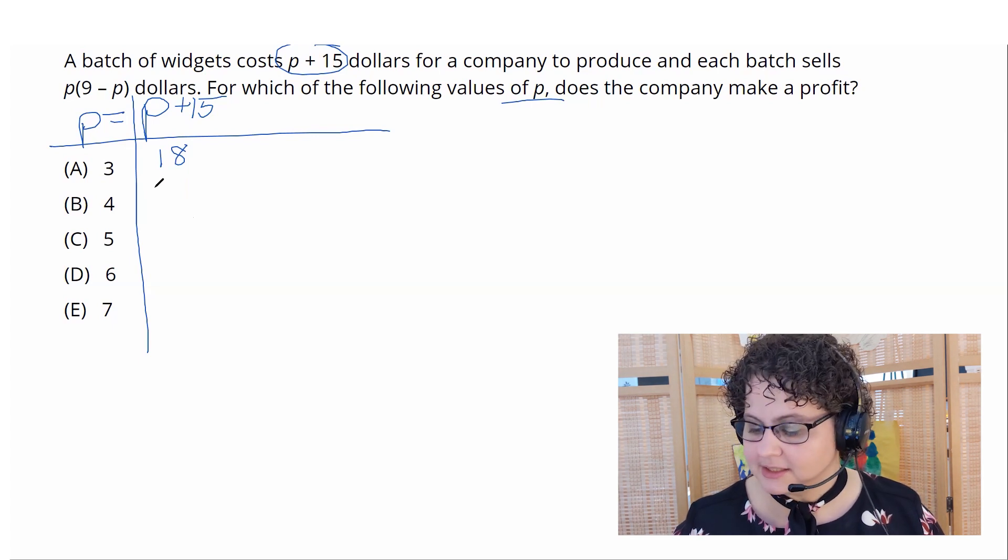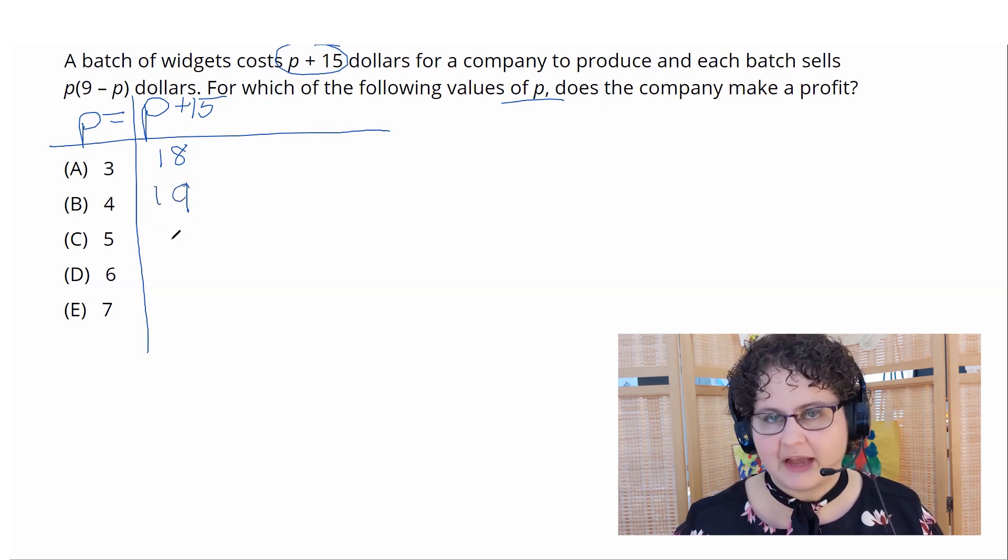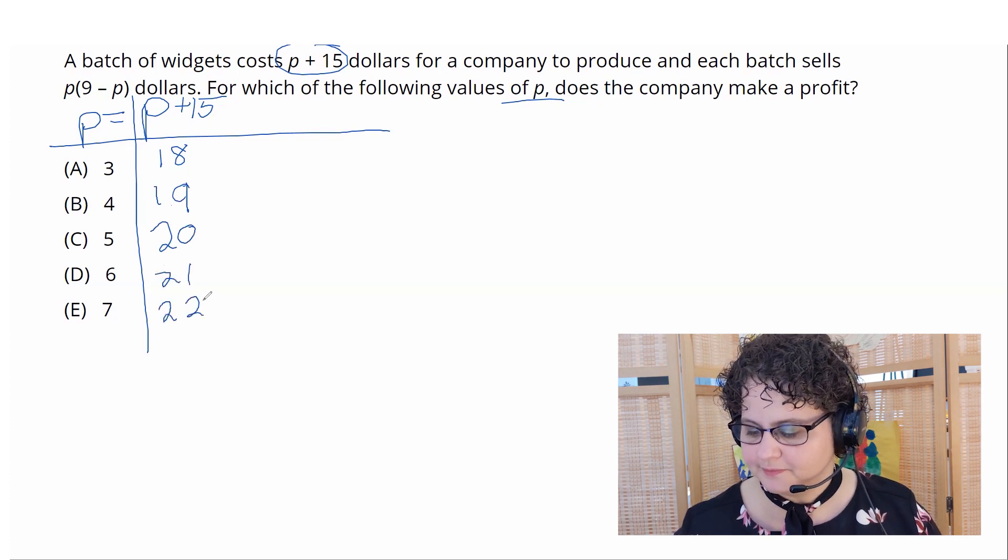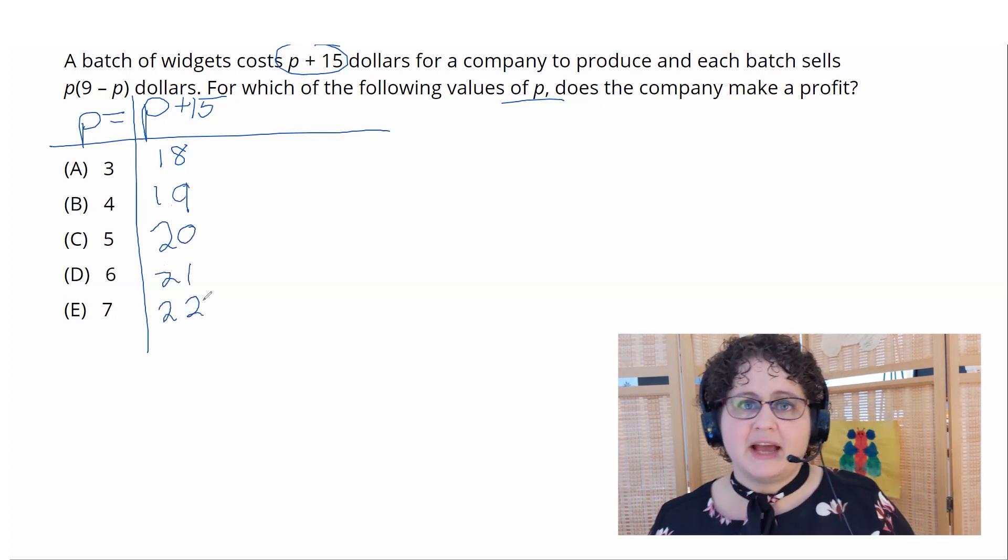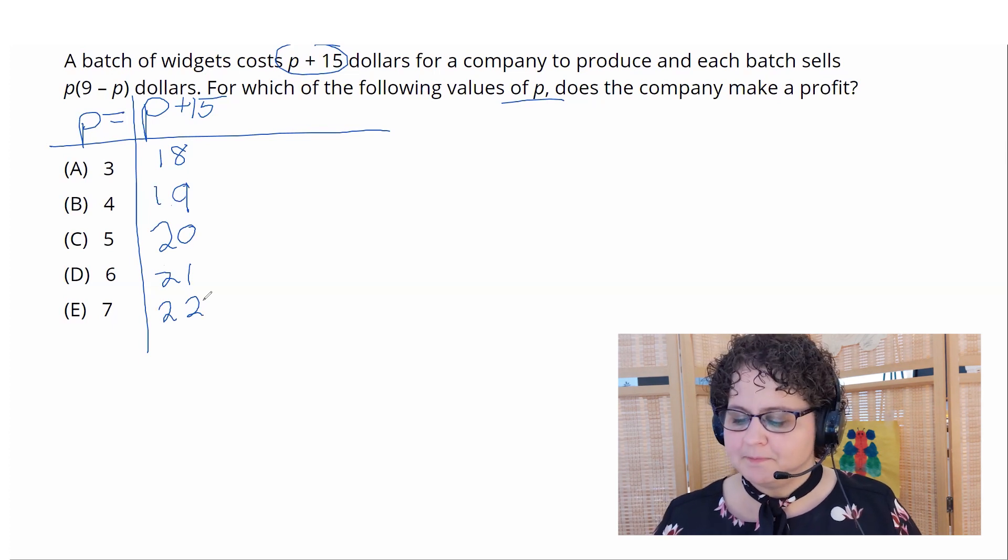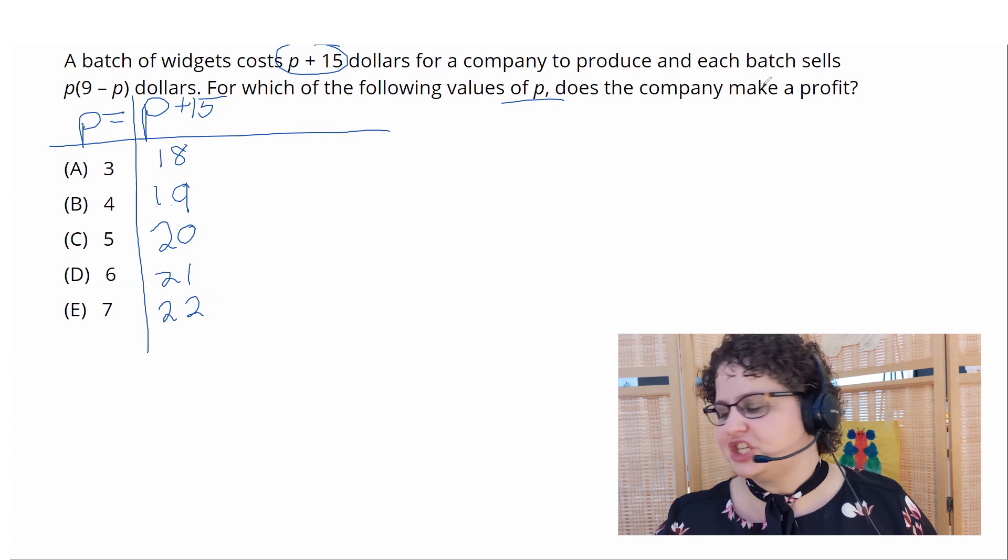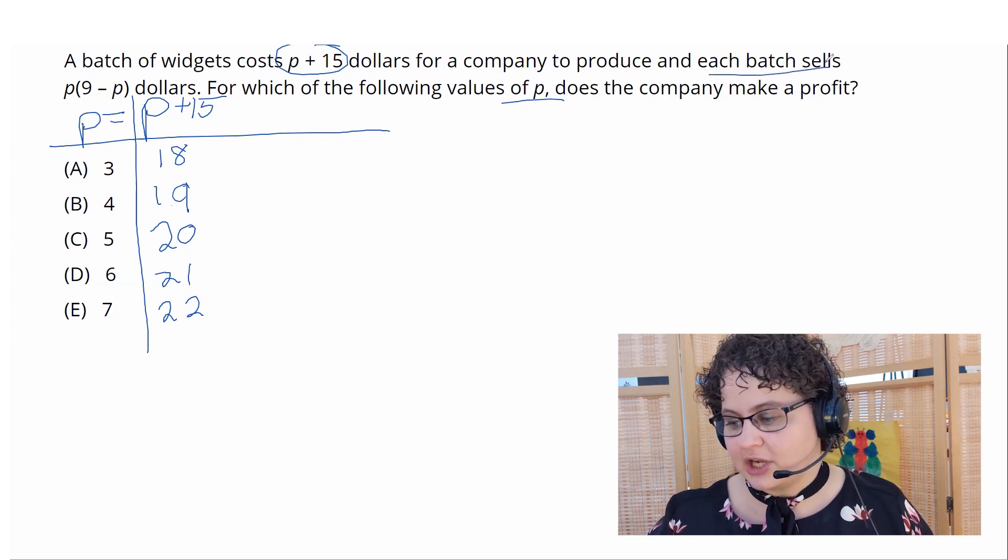If p is 4, the cost is 19, 5 it's 20, 21, 22. All right, very simple, easy math. There's no chance I made an error there. So now to answer the question, we also need to figure out how much each batch sells for so we can start talking about profit.